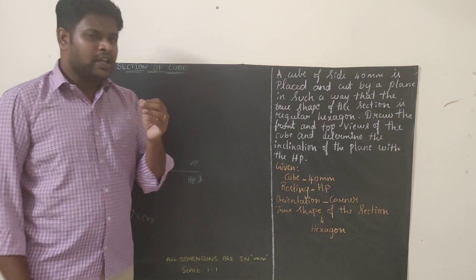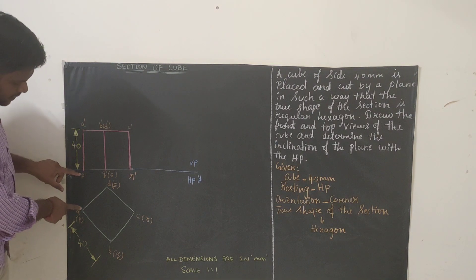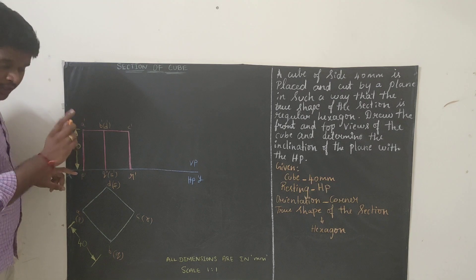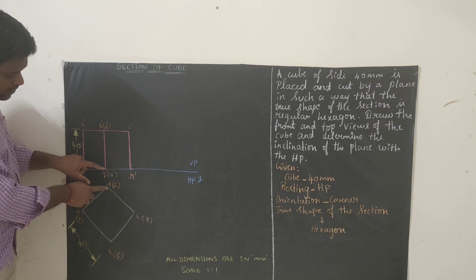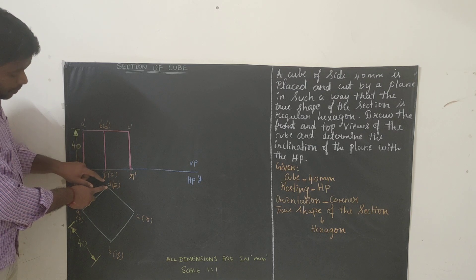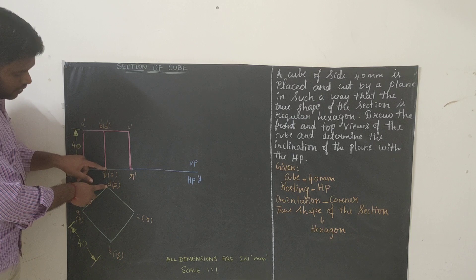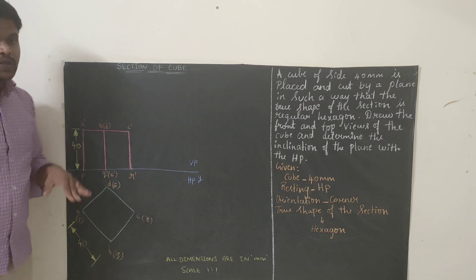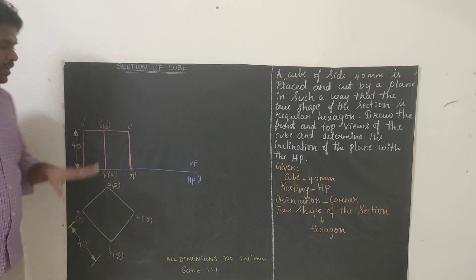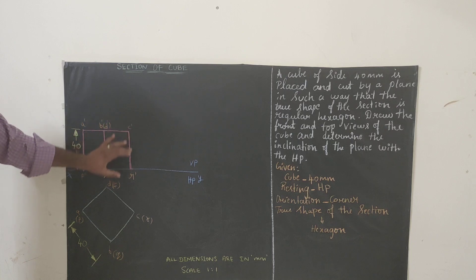Since it is a cube, height will also be 40mm. Take your scale and keep it parallel and perpendicular — vertically — to get the three points on the reference line. For 40mm height, draw a line and try to draw the box for the front view.